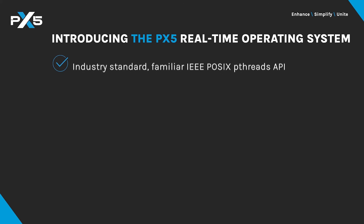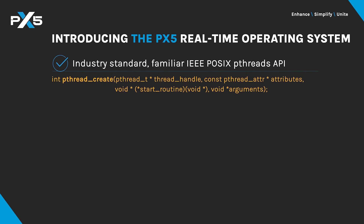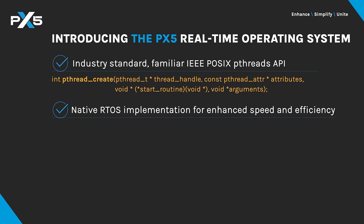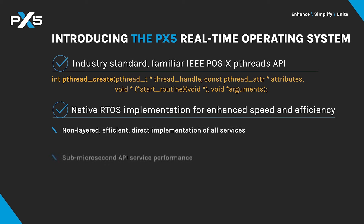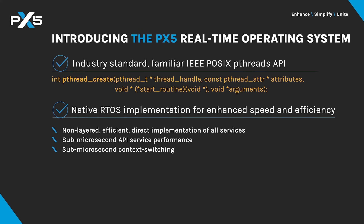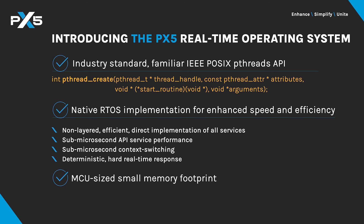PX5 indeed uses the POSIX PThreads API. It is a native implementation — not layered — enabling it to deliver sub-microsecond API service performance, sub-microsecond context switching, and deterministic real-time response. It achieves all this in an MCU-sized small memory footprint, as small as 1 kilobyte for minimal applications and typically under 10 kilobytes for most applications, with as little as 1 kilobyte of RAM. PX5 is also designed for simplified installation, on the order of a few minutes in most cases.